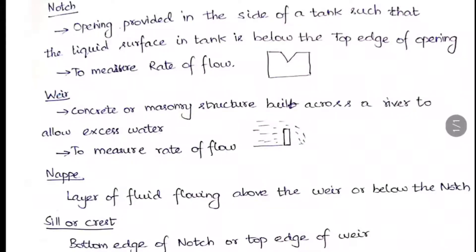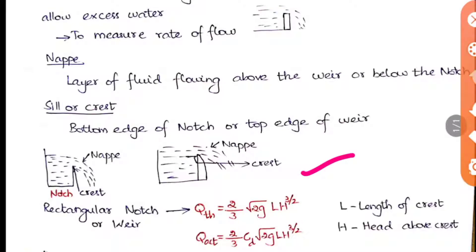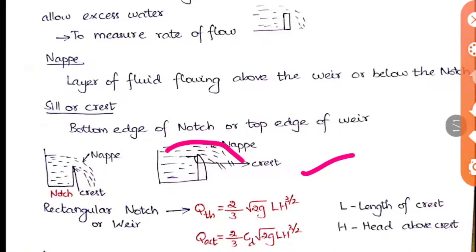Now we are going to see two important terms in notches and weirs. In this simple diagram, we need to understand nape and crest. Nape is the layer of fluid flowing above the weir or below the notch. When you take the notch, it flows below the notch — that top fluid layer is called the nape. When you take the weir, the top layer flowing above the weir is called the nape.